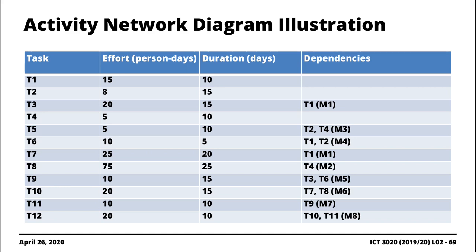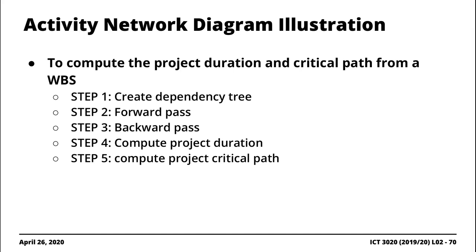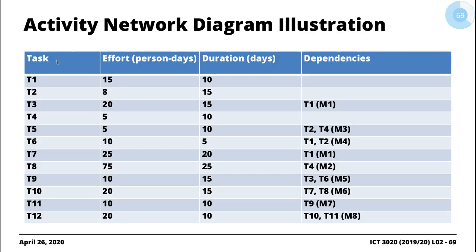The input for the activity network is typically the task IDs or task names, the associated durations, and the dependencies that exist amongst the tasks. This comes from the WBS or work breakdown structure — you come up with tasks, how long each task will take, and the potential dependencies associated with the different tasks. That's all you need. Using these three aspects, we can derive an activity network.